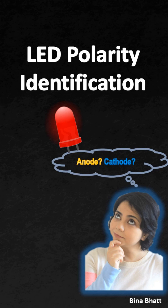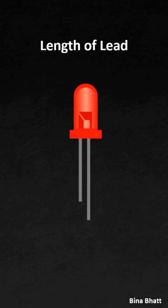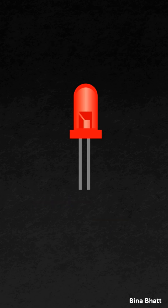LEDs are polarized components, so in order to connect them properly in a circuit you must know which lead is positive or anode and which one is negative or cathode. The first method is to check the length of the lead — usually the longer lead is the anode and the shorter one is the cathode.